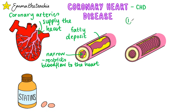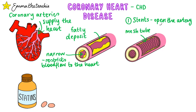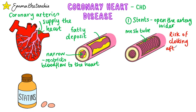The first method is stents. These are little mesh tubes that can be put inside the blocked artery, where they then squash down the fatty deposit, opening the artery wider. They are left in place, allowing the blood vessel to work properly. The issue is that stents can cause a risk of clotting after they've been put in.